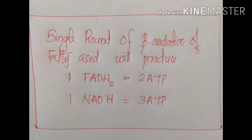A single cycle of beta oxidation of fatty acid produces 1 FADH2 and 1 NADH. 1 FADH2 on the electron transport chain will produce 2 molecules of ATP, and 1 NADH will produce 3 ATP. So 1 FADH2 and 1 NADH together yield 5 ATP. These are high energy compounds, that's why they produce more than 1 ATP. According to the modern energy concept, 1 FADH2 produces 1.5 ATP and 1 NADH produces 2.5 ATP, but in the older concept, 1 FADH2 = 2 ATP and 1 NADH = 3 ATP.